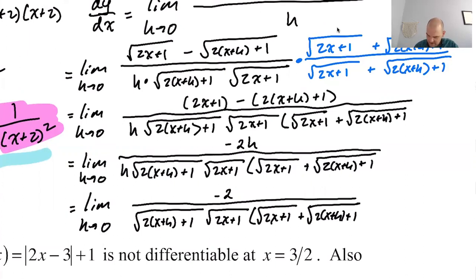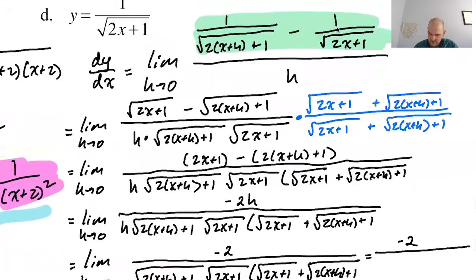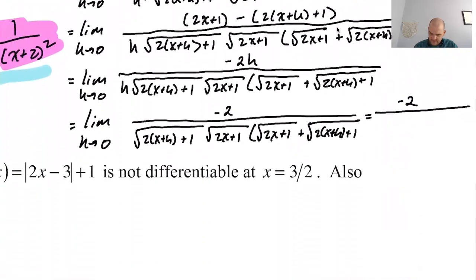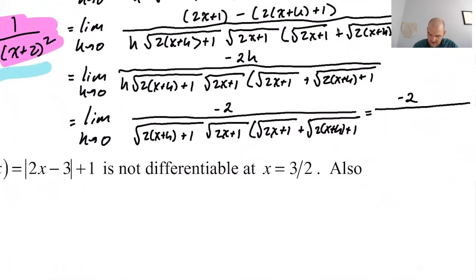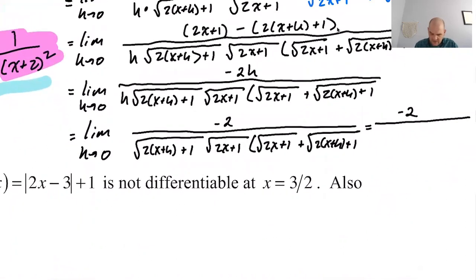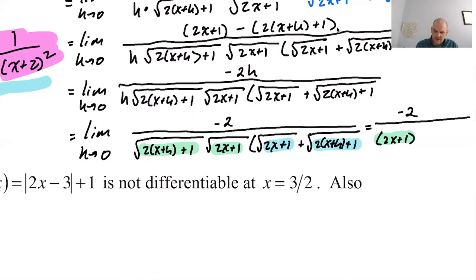The numerator is obviously negative 2. If h equals 0, then these two radical expressions are exactly the same. So radical 2x plus 1 times radical 2x plus 1 is actually just 2x plus 1. And then radical 2x plus 1 plus radical 2x plus 1 gives us 2 radical 2x plus 1.